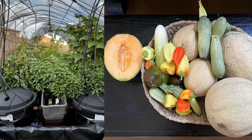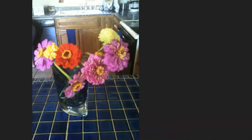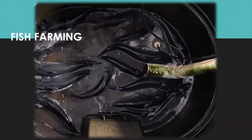We're growing a lot of different types of food. Everything you see here was grown in aquaponics. A quick list: lettuce, Brussels sprouts, melons, peppers, cucumbers, squash, celery, garlic, cilantro, beans, cauliflower, quinoa, collard greens, onions, chives, and much more. We've also been able to successfully produce flowers — zinnias do quite well, for example.